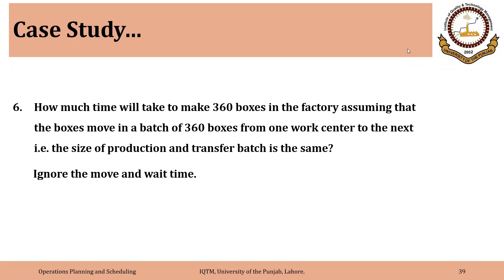So we make 360 part A's and 720 part B's on stamping. Then this set moves to painting and 360 A's and 720 B's are painted, then dried, and that set then moves to assembly where they are assembled together. We are ignoring the move and wait time.